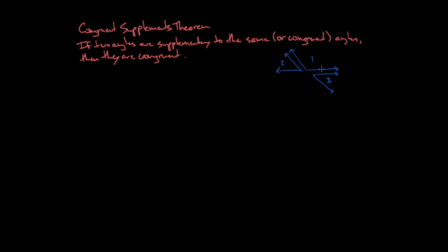You can test this out and pick whatever angle measure you want. Let's say the measure of angle 1 is 120 degrees. So the measure of angle 2 — what does it have to be to be supplementary to angle 1? Well, the measure of angle 2 then has to be 60 degrees. And the measure of angle 3 — what does it have to be to be supplementary to angle 1? It also has to be 60 degrees. So if I have two angles that are supplementary to the same angle, their measures must be congruent.